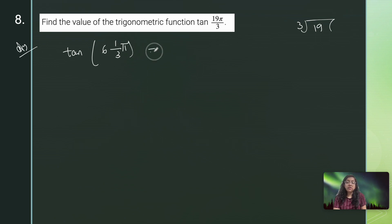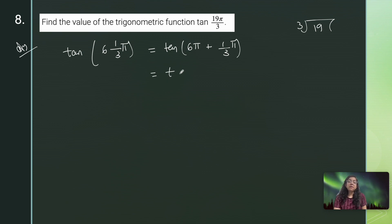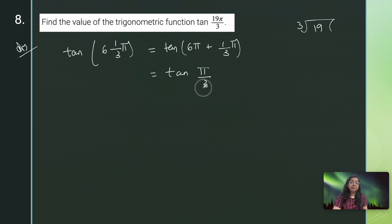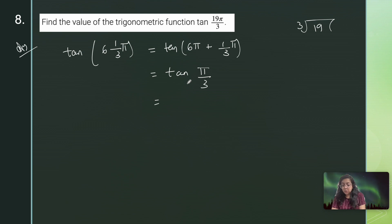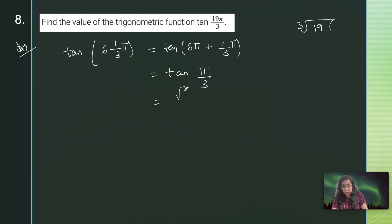Next: tan(19π/3). I can write 19π/3 = 6π + π/3 = 3×(2π) + π/3. So tan(19π/3) = tan(π/3). Since π/3 = 60°, we get tan 60° = √3.